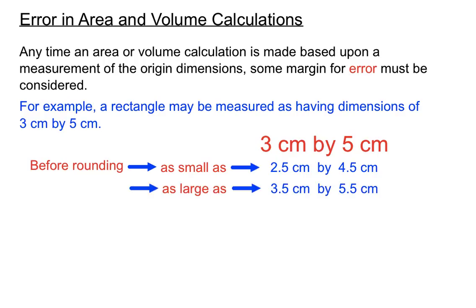But they could also be almost as large as 3.5 rounded down, and almost as big as 5.5 but rounded down to 5. Not quite there, because 5 or more we'd round up, but it could be almost as big as 3.5 and 5.5 — that's the system we use here. Those are the margins for error we take into account before we quote a 3cm by 5cm rectangle.